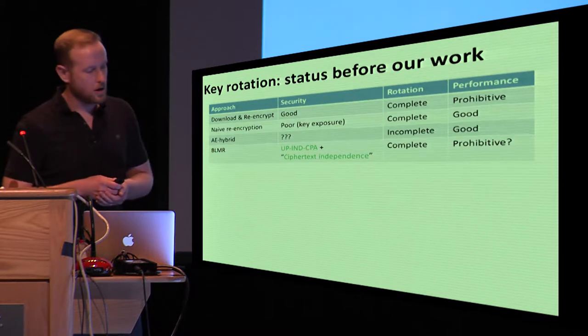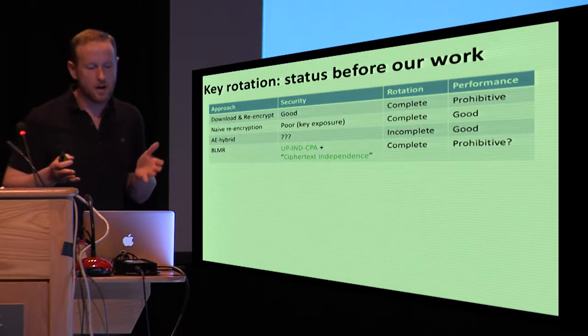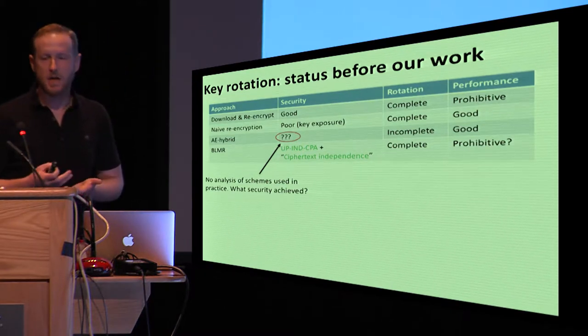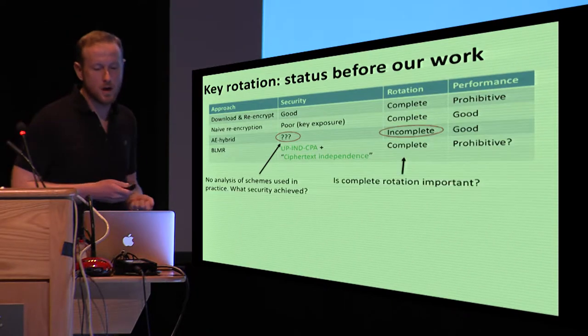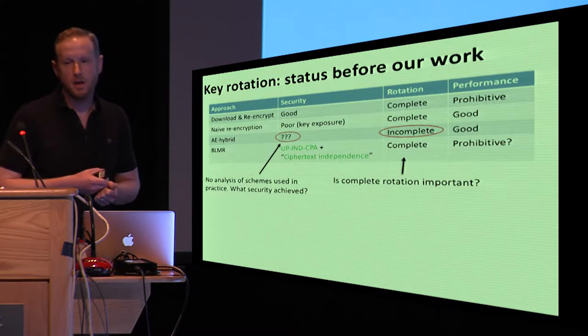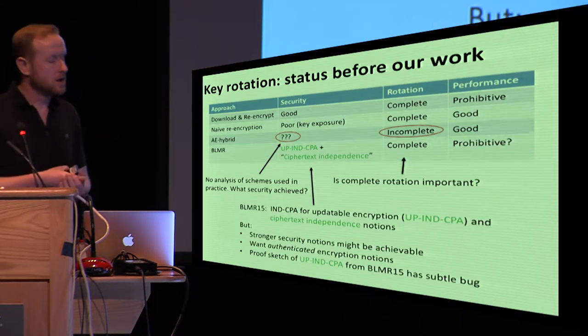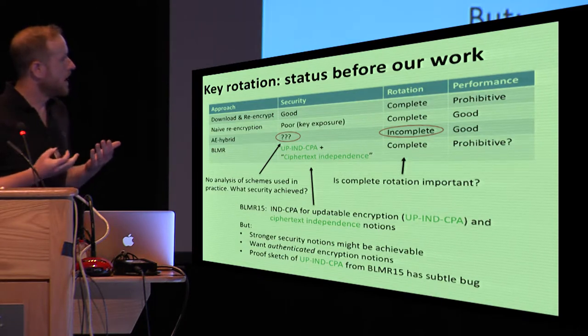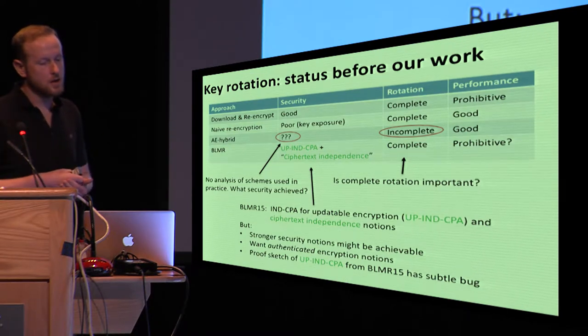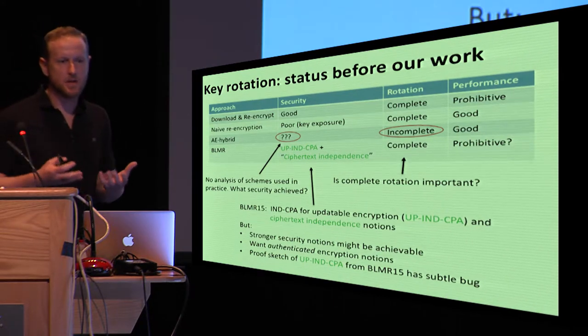So the status before our work on key rotation is that we have these naive schemes that are ultimately unsatisfying. We have a scheme that's used in practice that has had no formal security analysis, and it's not exactly clear what security this achieves. In particular, it wasn't really clear what we forego by not having complete rotation, like what type of attacks arise because of this. And then we have this nice work by BLMR15 that targeted chosen plaintext attack security, and they provided a notion of IND-CPA that lifts IND-CPA to this key rotation setting, and also a notion of ciphertext independence that tries to capture this idea that you're refreshing all the secrets.